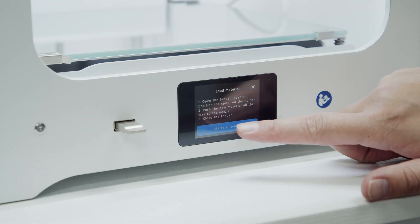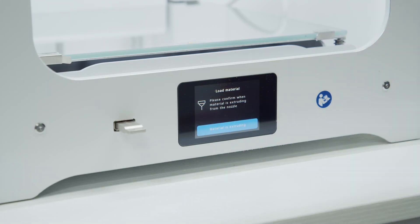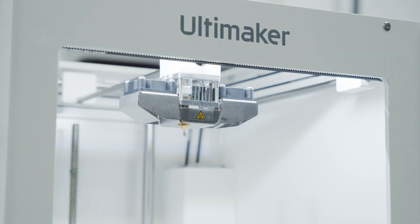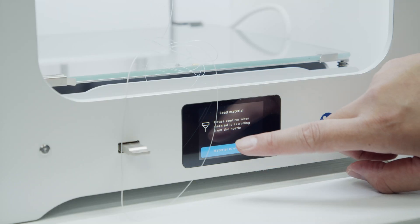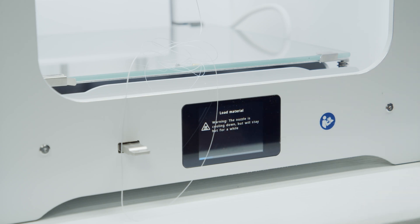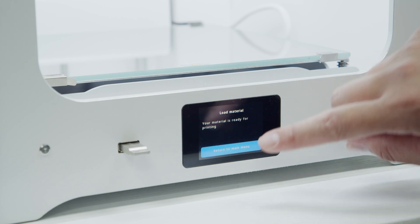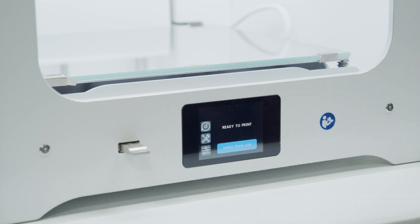Once you do that, go back to the screen and press material loaded. The nozzle is heated so the printer will start extruding filament to ensure it's loaded properly. When you see the filament start extruding properly without little bubbles on the strand, press material is extruding. After you hit that, the nozzle will begin to cool so that the filament stops extruding. Now the material is loaded. Press return to menu and you are ready to start printing.